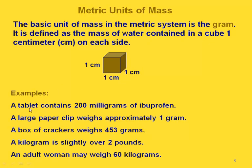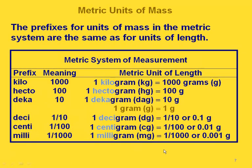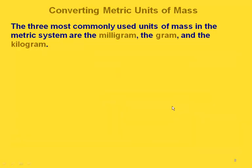Some examples: a tablet contains 200 milligrams of ibuprofen; a large paper clip weighs approximately 1 gram; a box of crackers weighs 453 grams; a kilogram is slightly over 2 pounds, so an adult woman may weigh 60 kilograms, which is a little more than 120 pounds. Since we're in the metric system, we have the same prefixes as with length: kilo, hecto, deca, deci, centi, and milli. The base unit in the middle is 1 gram. The three most commonly used are the milligram, the gram, and the kilogram.